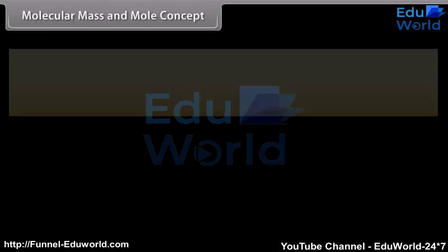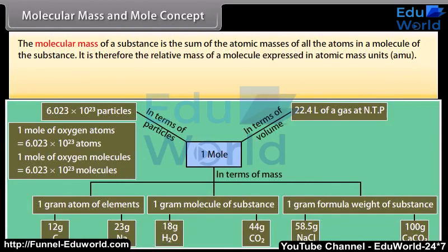The molecular mass of a substance is the sum of the atomic masses of all the atoms in a molecule of the substance. It is therefore the relative mass of a molecule expressed in atomic mass units.